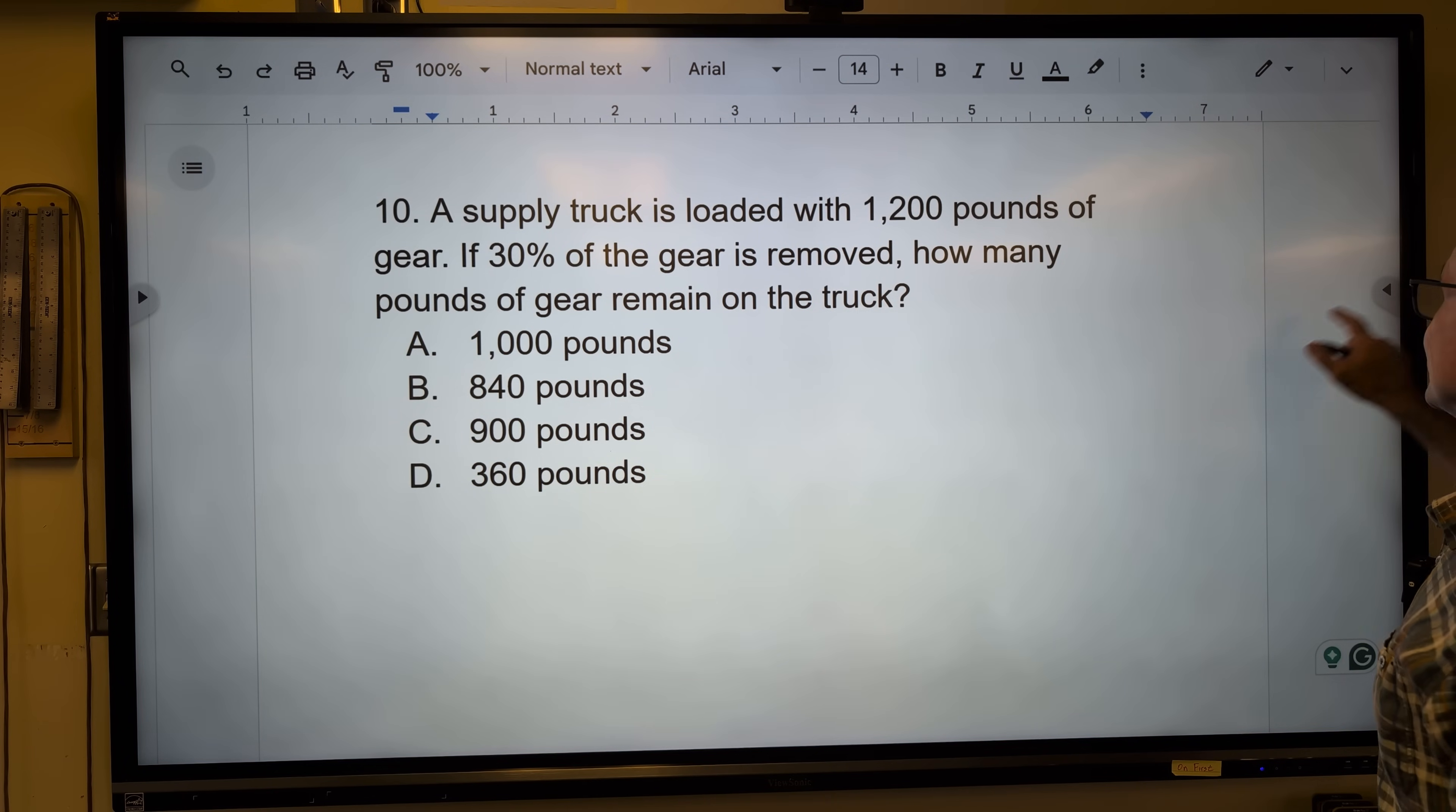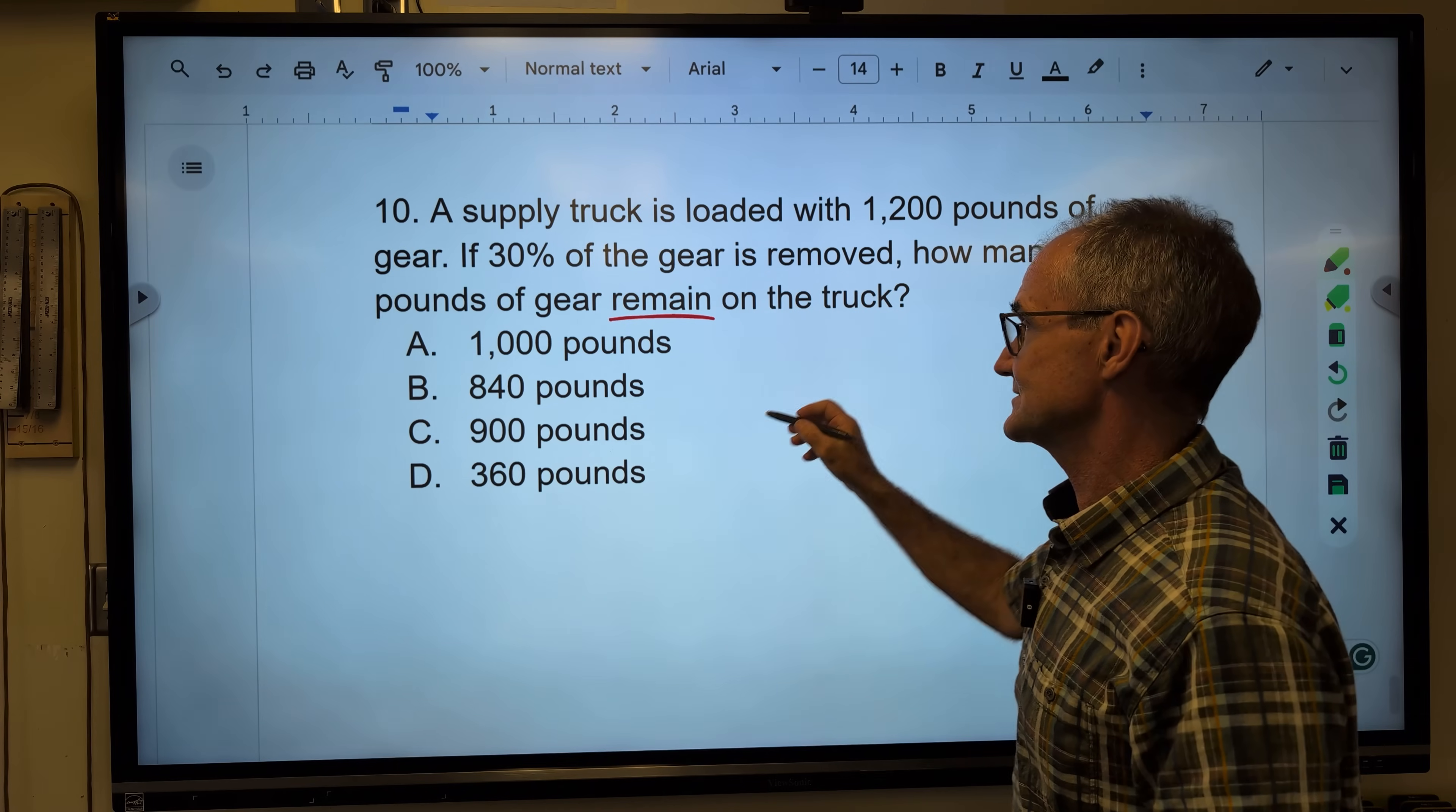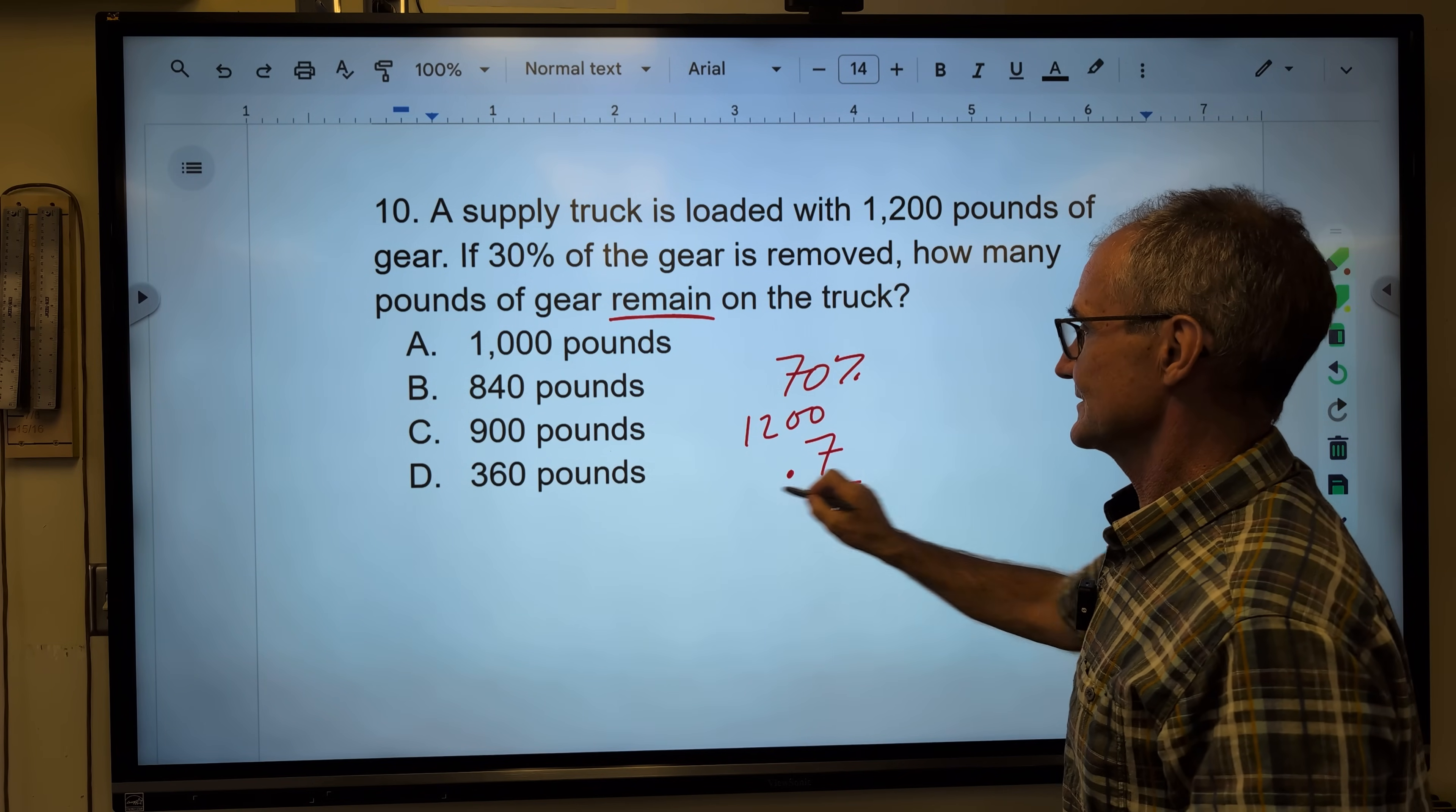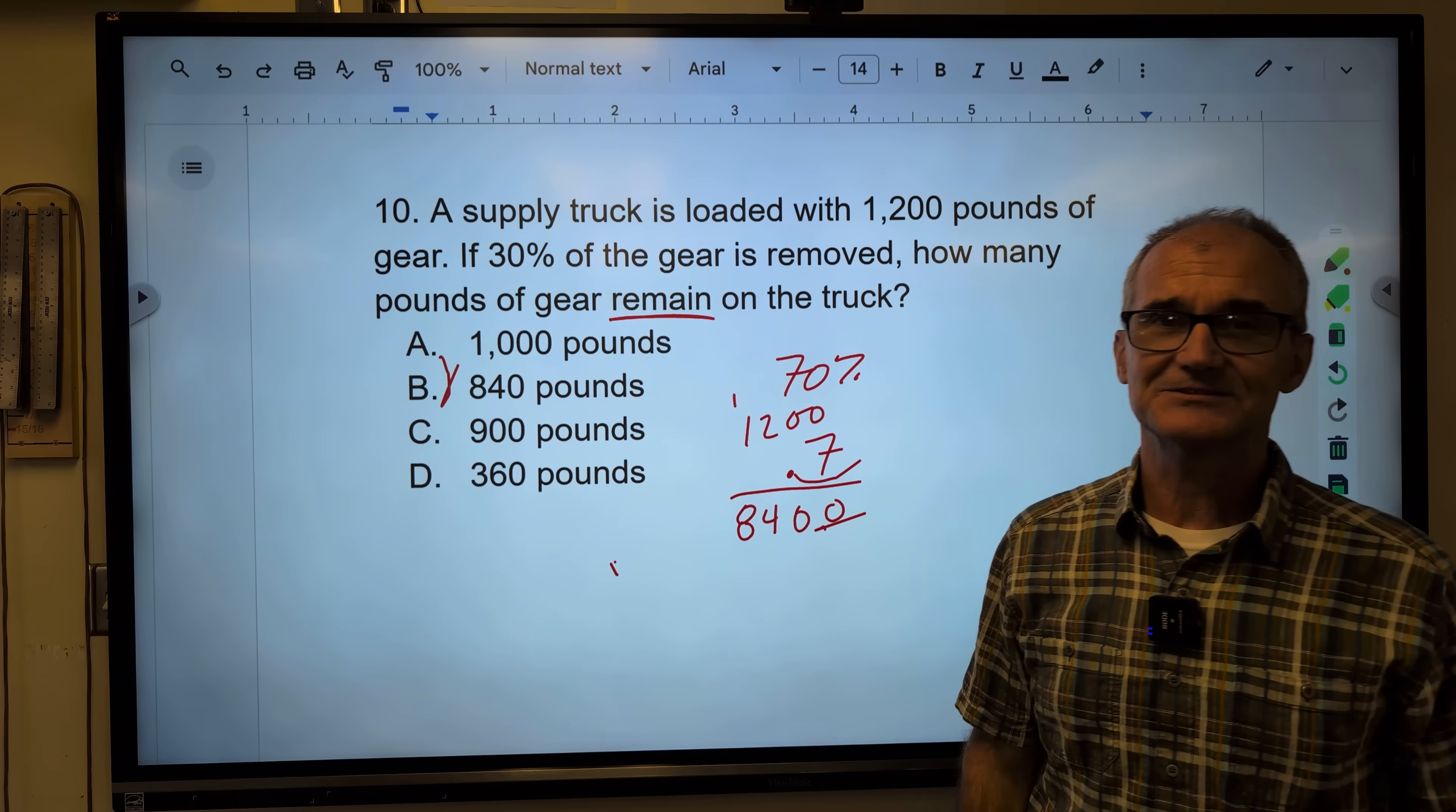And finally, number 10. Supply truck is loaded with 1,200 pounds of gear. 30% of the gear is removed. This is the key word right here, how much gear remains. So I'm going to do 1 minus 30% to get 70%. I'm going to convert that into a decimal, 0.7, and then I'm going to take that 0.7 and multiply it by 1,200 to get 840 pounds. Answer B.